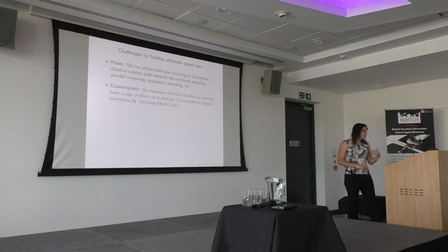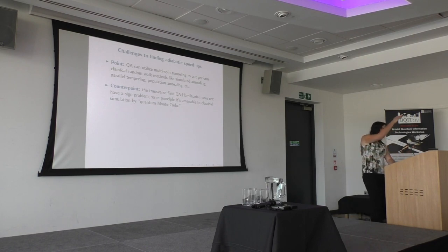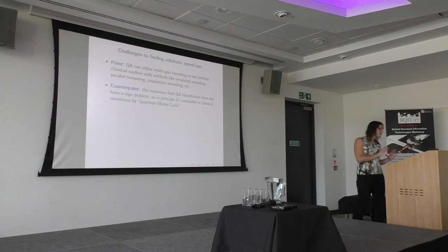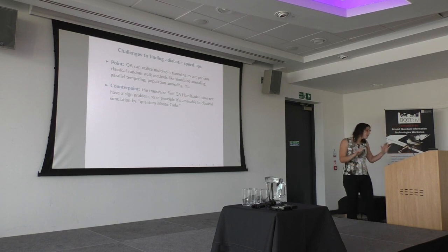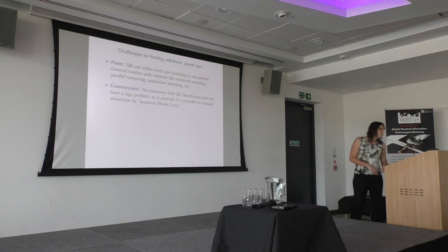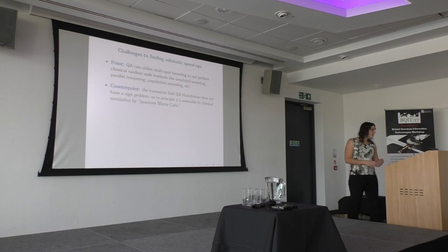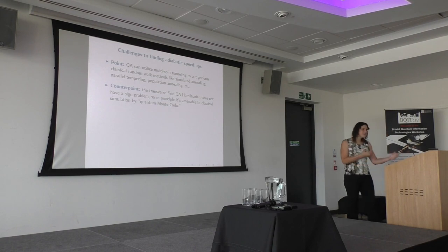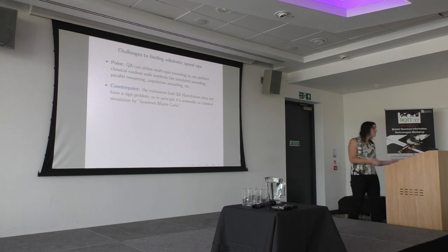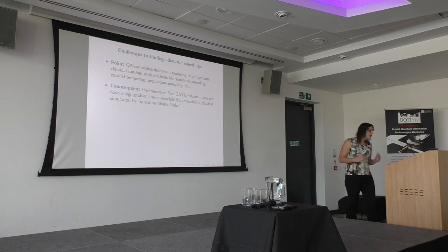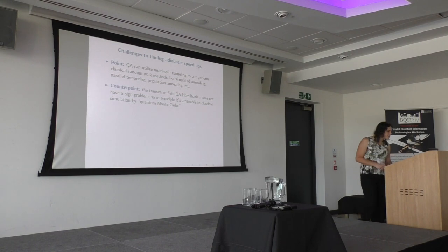But there's a counterpoint: the transverse field quantum annealing Hamiltonian — where f was a diagonal Hamiltonian matrix and the transverse field represents off-diagonal terms — doesn't have a sign problem. So in principle you could apply methods known as quantum Monte Carlo. Quantum Monte Carlo might seem confusing because it has 'quantum' in it, but it's actually a classical algorithm. You take your quantum spin system and map it onto a classical spin system with the same partition function, so running classical dynamics to sample from the classical Gibbs distribution gives you information about quantum observables as well.